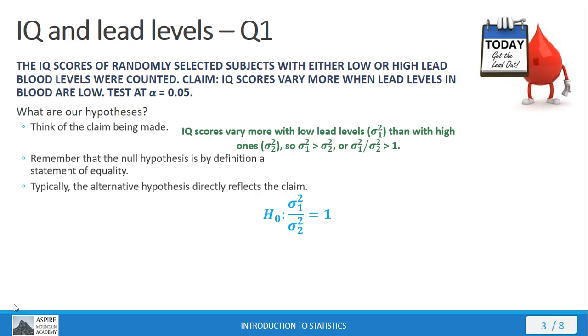The alternative hypothesis typically reflects the claim. We don't have any semblance of equality here, so we can just take that and directly adopt it for our alternative hypothesis.